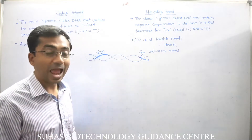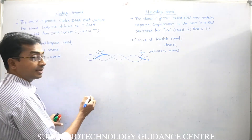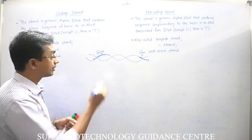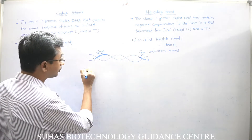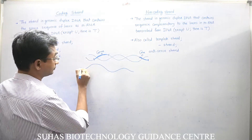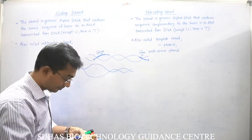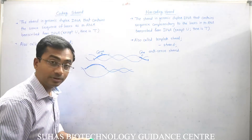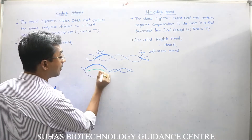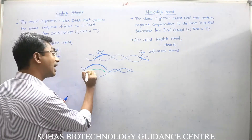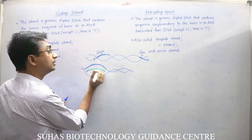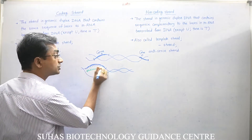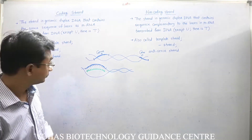Now what will happen at the time of transcription — we are well familiar that from this gene will be copied an mRNA, because the mRNA will be exactly complementary to the gene. I am just opening that gene now, and because of the activity of RNA polymerase, mRNA will be formed on it. This mRNA will have a sequence complementary to this strand of DNA on which genes are present, so definitely this is the strand which is being copied.